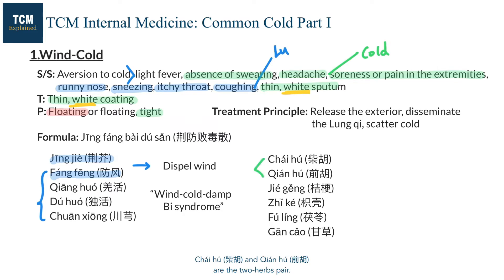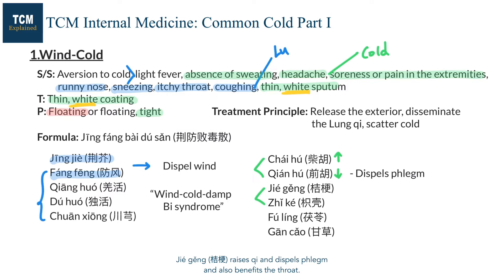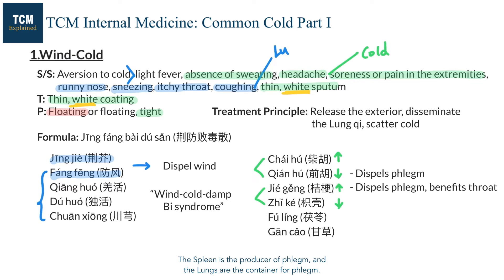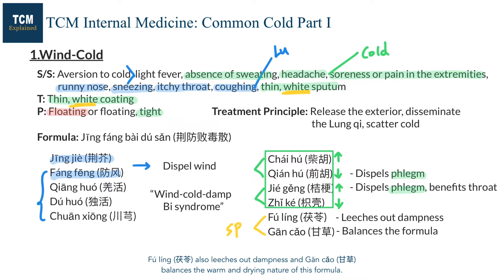Chai Hu and Qian Hu are a pair: Chai Hu raises Qi and disperses phlegm, while Qian Hu directs Qi downward and dispels phlegm. Jie Geng and Zhi Ke are another pair — Jie Geng raises Qi, dispels phlegm, and benefits the throat, while Zhi Ke directs Qi downward and relaxes the chest. The spleen is the producer of phlegm and the lungs are the container, so we use Fu Ling and Gan Cao to tonify the spleen. Fu Ling also leaches out dampness and Gan Cao balances the warm and dry nature of this formula.